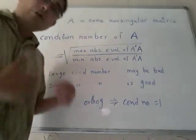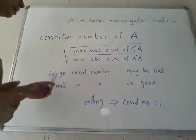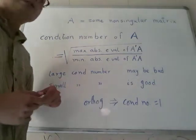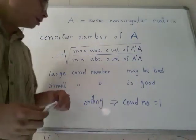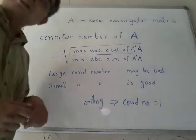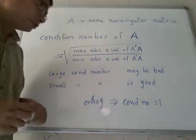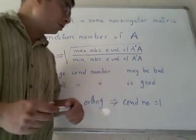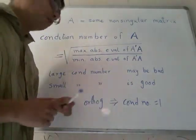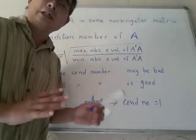Now the heuristic guideline is this: that if the condition number is large, then you might land yourself into trouble. But if the condition number is small, then that is a safe case. So large condition number does not necessarily mean that you will be in trouble. But small condition number means that there will not be any trouble.